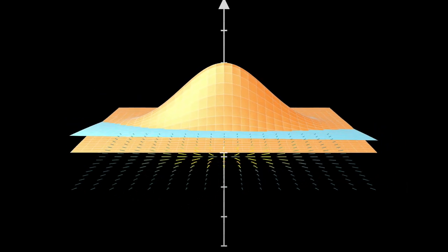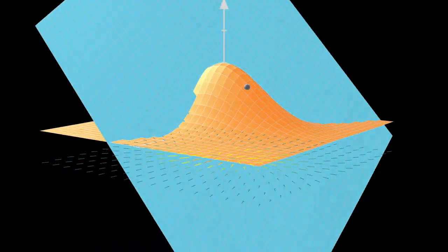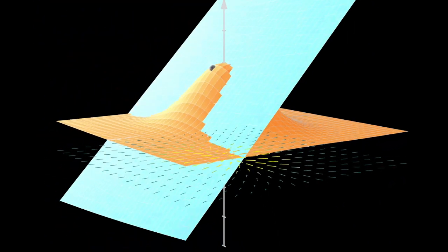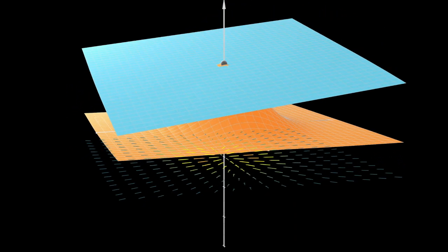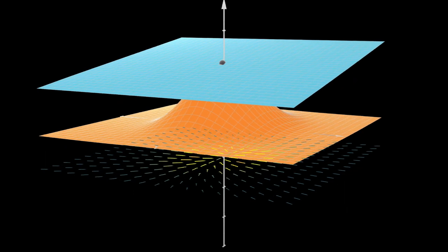Here I'm showing you a simple two-dimensional surface and its gradient vector field. Our affine map is now the tangent plane. Here I'm showing a point moving around the surface and the best approximating affine map at that point. As expected, it's the tangent plane.